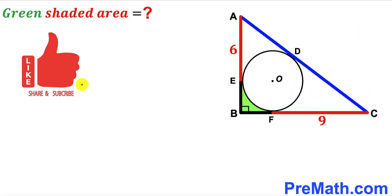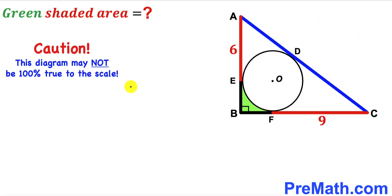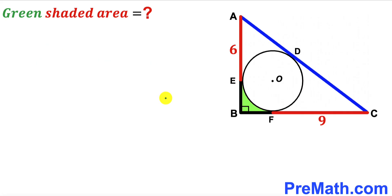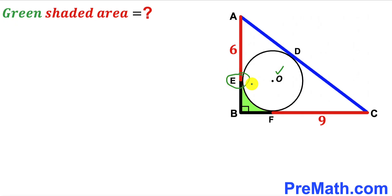Please don't forget to give a thumbs up and subscribe, and keep in mind that this figure may not be 100% true to scale. Let's get started. Our very first step is to calculate the radius of this circle. We'll label the radius as lowercase r, and we'll connect center O with points E and F.